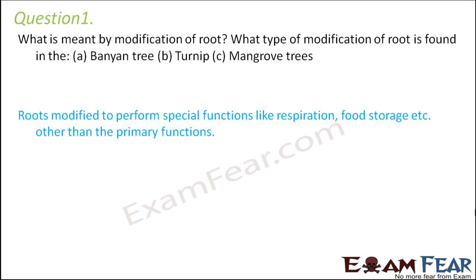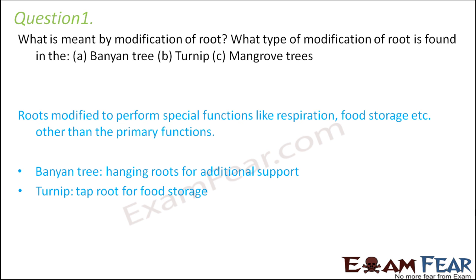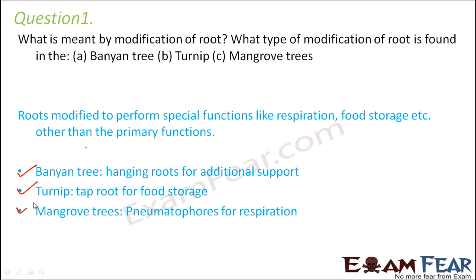In a banyan tree, we have hanging roots — some branches actually start growing downwards to provide additional support. These are also known as prop roots. In turnip, the tap root is extremely swollen and that swollen root helps in storage of food. In mangrove trees, which are aquatic plants, there are pneumatophores — spike-like structures coming out of the water with small pores called lenticels that help in exchange of gases, i.e., respiration.